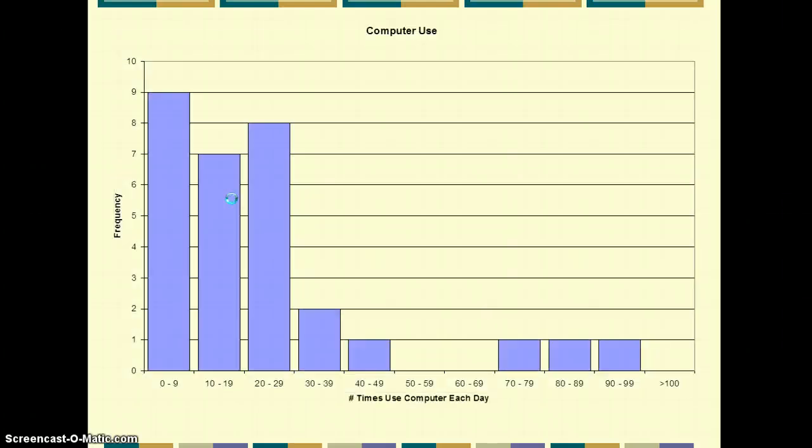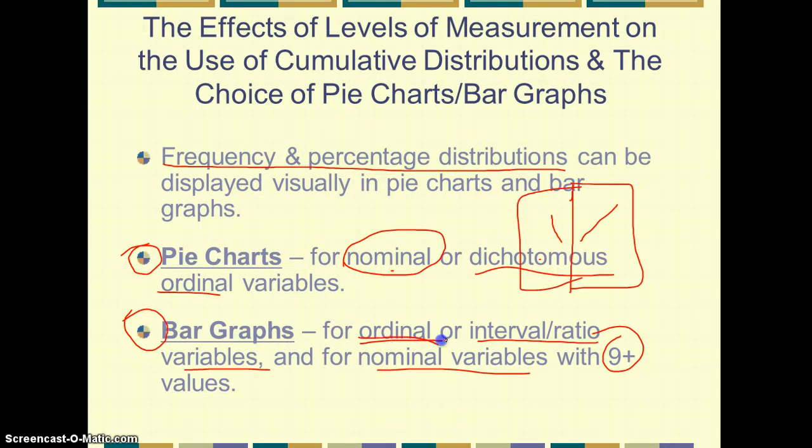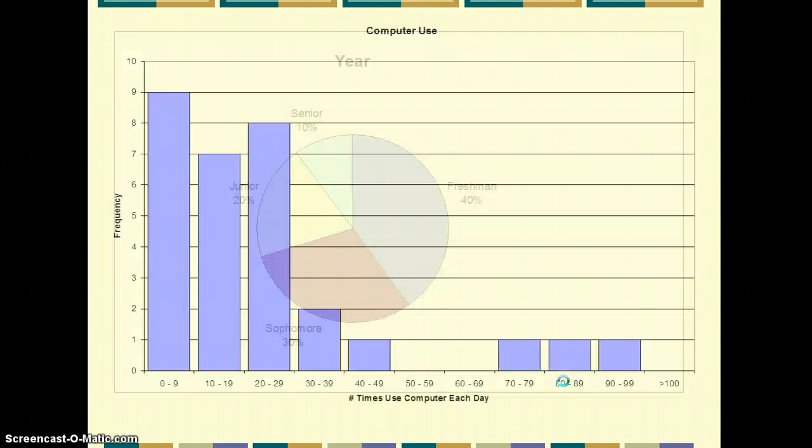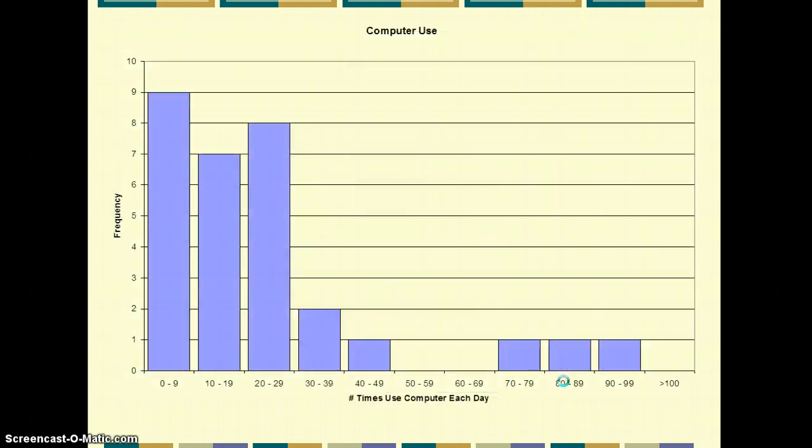Or we could use a bar graph. It's for ordinal, interval ratio, or nominal variables with nine plus values. Is computer use ordinal, interval ratio, or nominal with nine plus values? Well, let's look at what we have here. We have the number of times that students report using the computer each day. We have categories for the actual frequency. They're divided into roughly ten different times per category. So zero, one, two, three, four, five, six, seven, eight, nine is ten options.